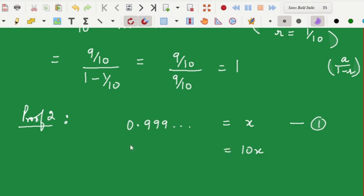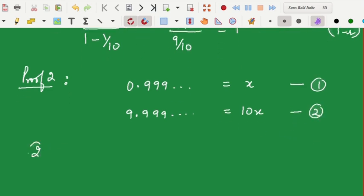10x is when you multiply this with a 10, the decimal moves one place forward. So it becomes 9.999 dot dot dot. Let's call this as number 2. Now let's do 2 minus 1. What do we get when we subtract 1 from 2? We get 10x minus x that means 9x, and here you have 9.999 minus 0.999. So that's equal to 9. The difference is 9 which gives you x as 1.